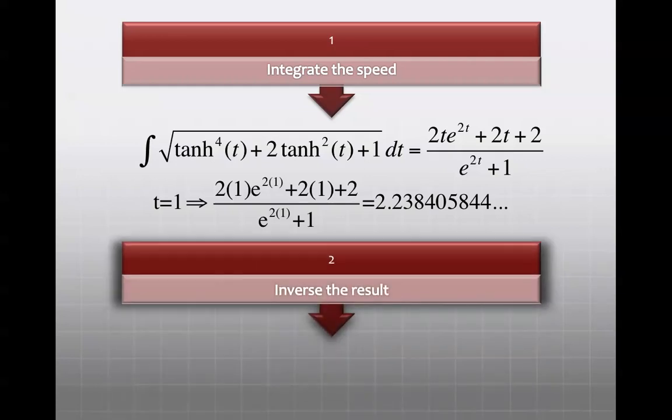The second step is then to inverse that. The way we do that is put one divided by 2.2384, and we get 0.4467 out.